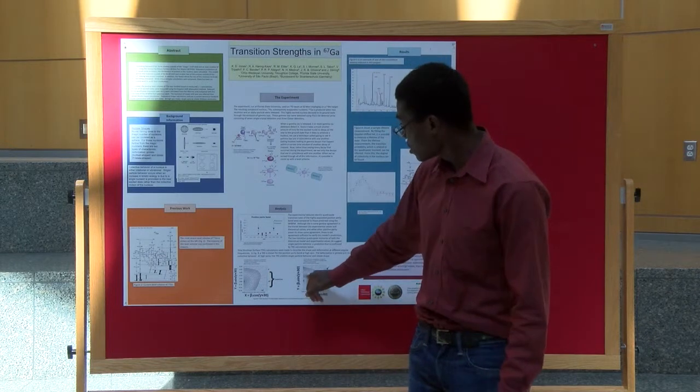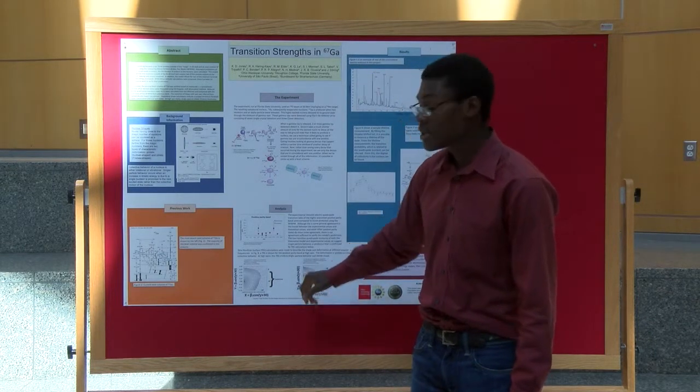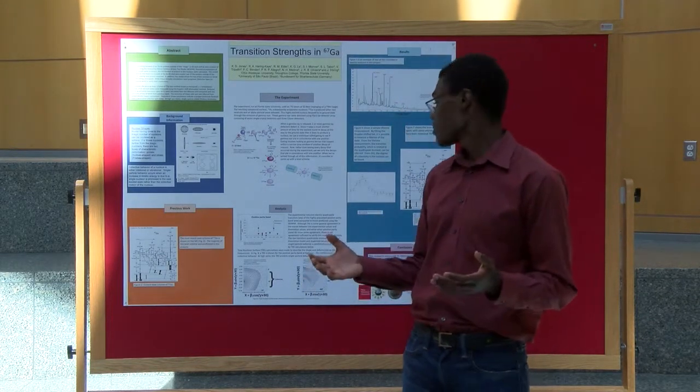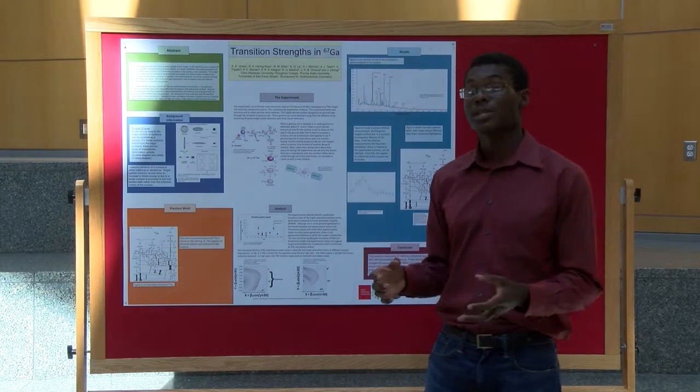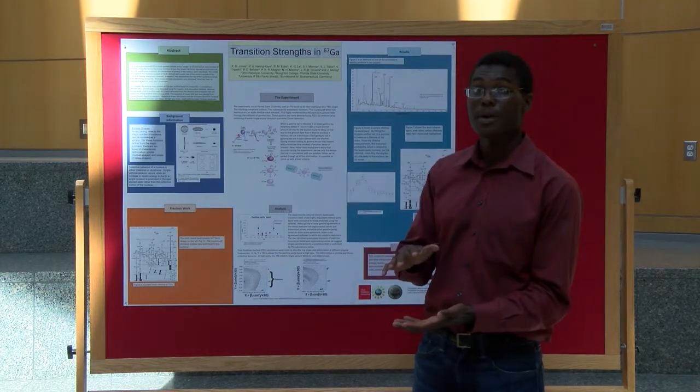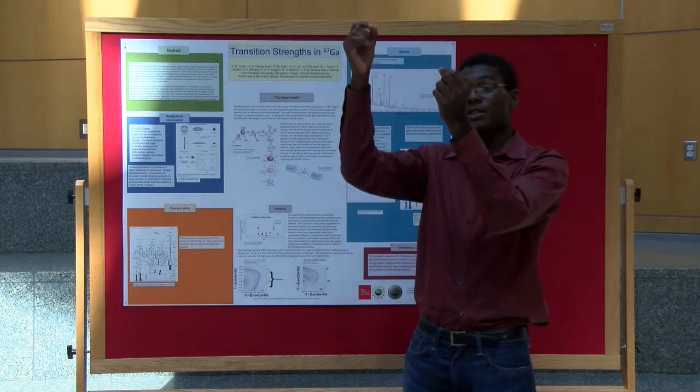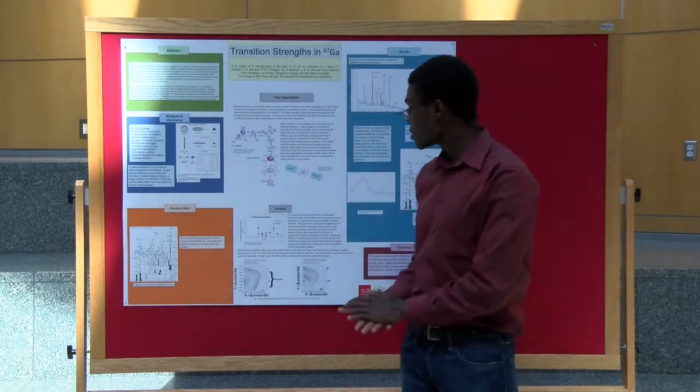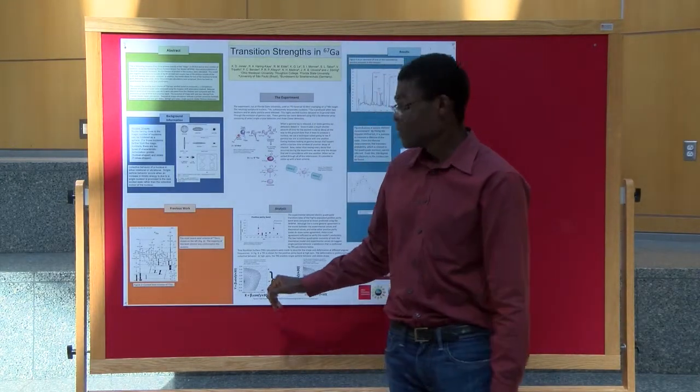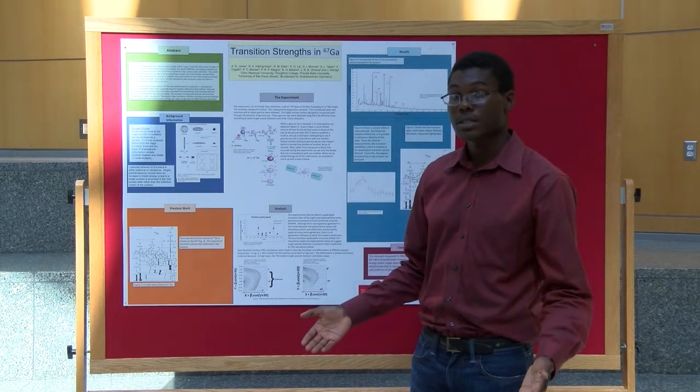At high spins, you can see right here, this is single particle oblate shape. So now we're talking about a frisbee shape where single particles are moving from discrete states to different energies. It's interesting that we do see this change of shape in gallium 67.